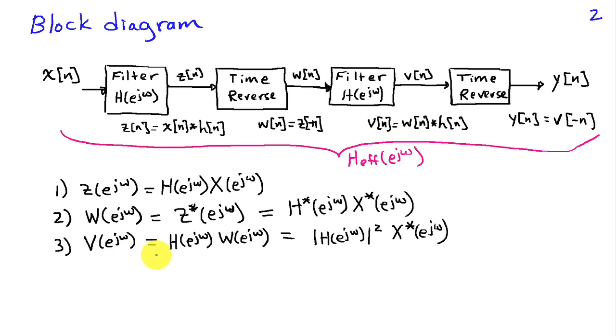Next, when we filter w, we multiply by H(e^jω) to get the magnitude of H(e^jω) squared times X*(e^jω). So that's our frequency domain representation for the output here at the v step after the second filter.